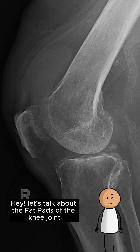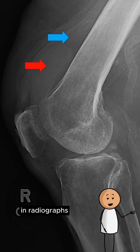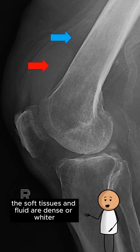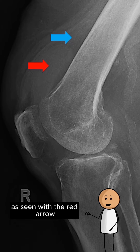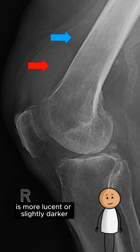Let's talk about the fat pads of the knee joint and how to identify joint effusion. In radiographs, the soft tissues and fluid are dense or whiter, as seen with the red arrow. Conversely, the fat, as shown with the blue arrow, is more lucent or slightly darker.